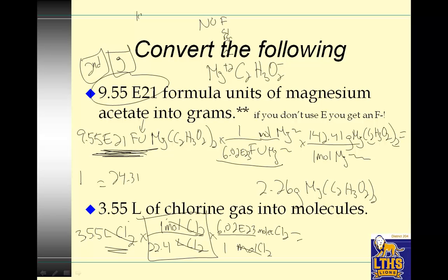Molecules of chlorine is equivalent to one mole. Notice I put moles on the bottom to cancel my units. And then I go to the periodic table. 3.55 divided by 22.4 times 6.02E23 equals 9.54E22 molecules of chlorine.